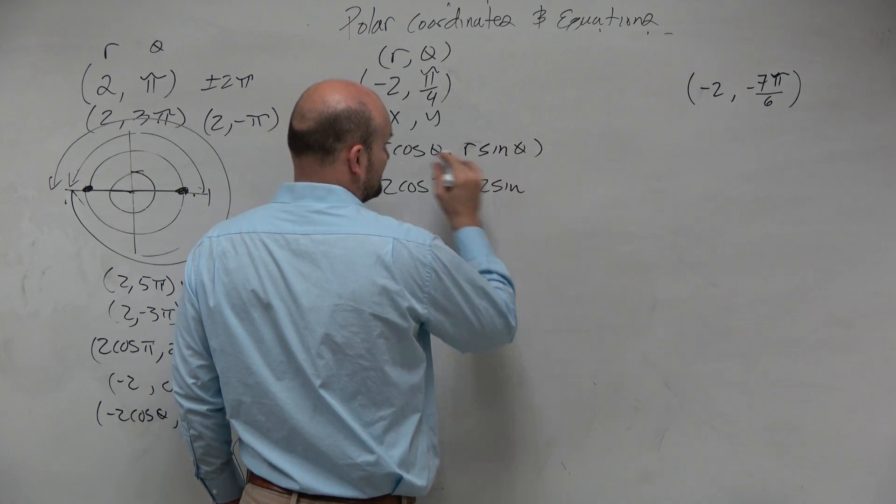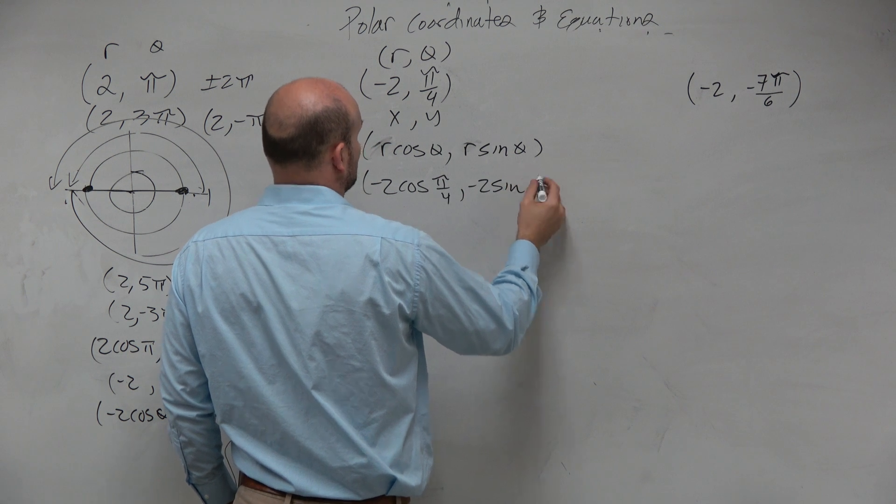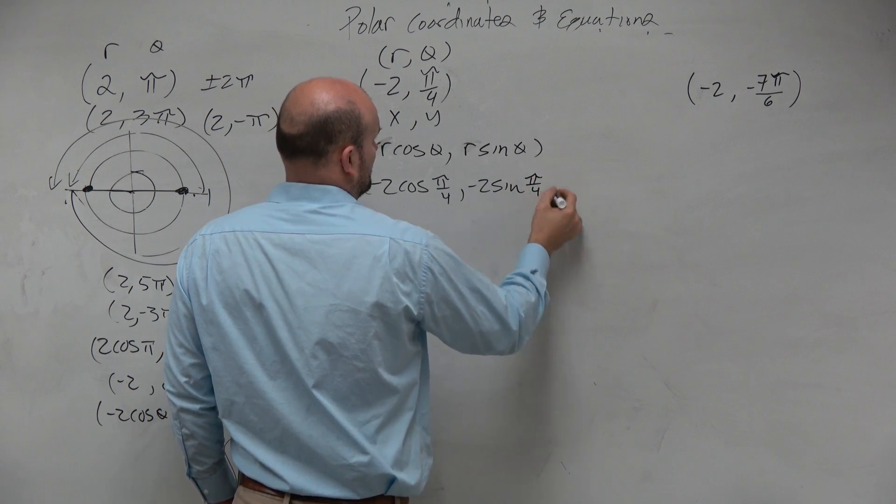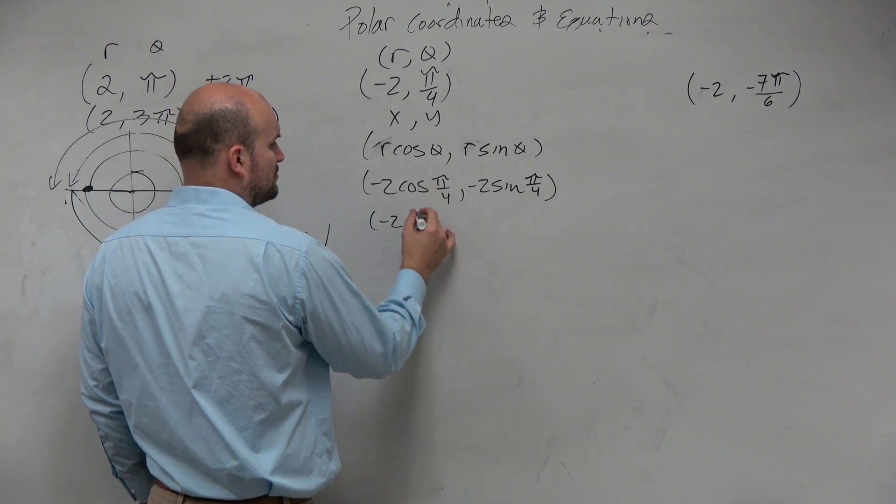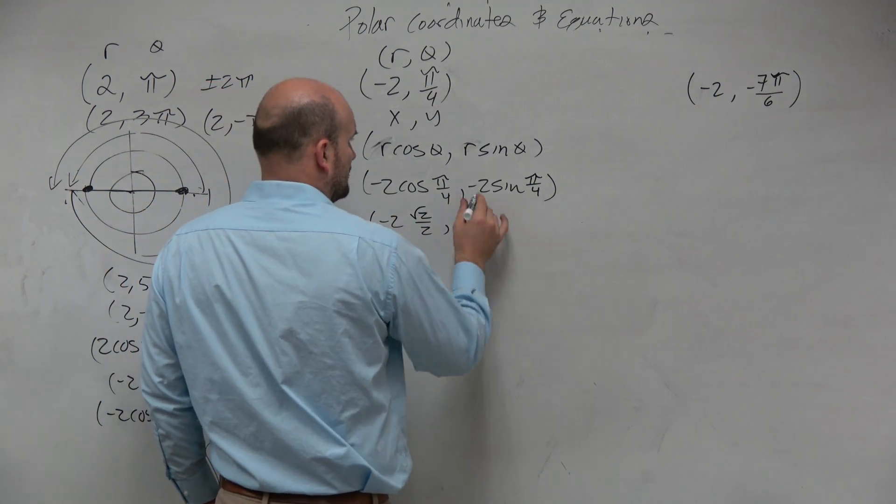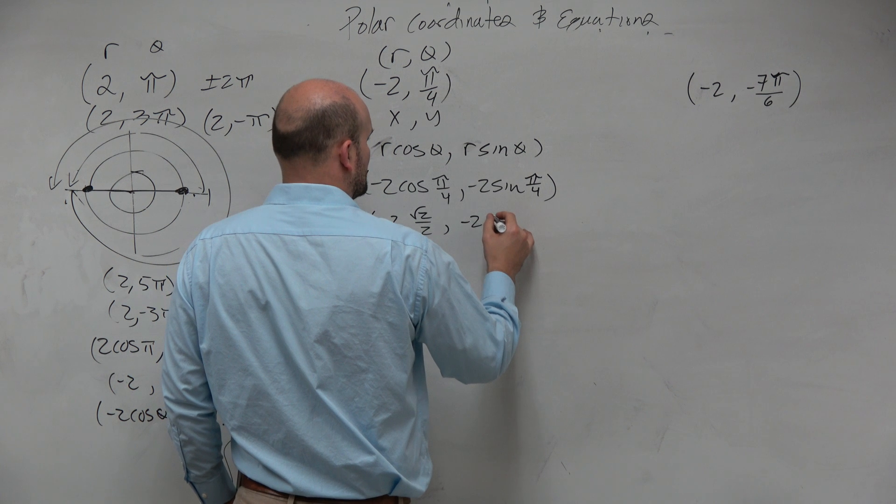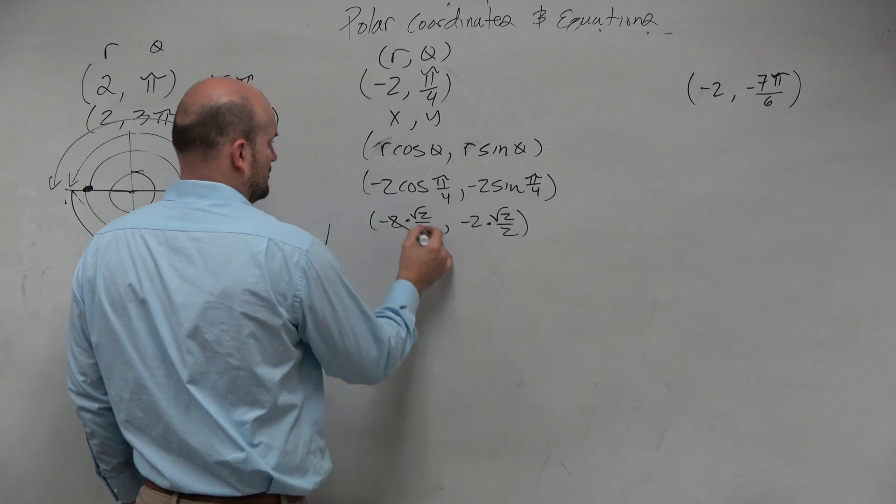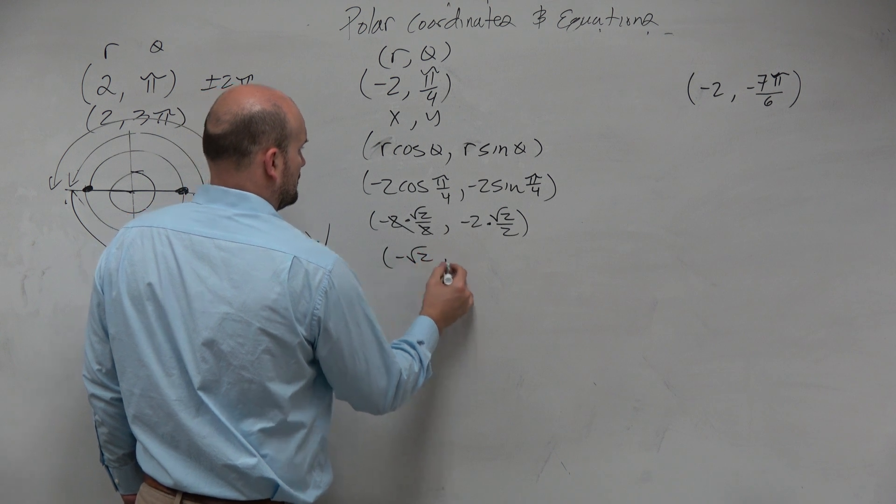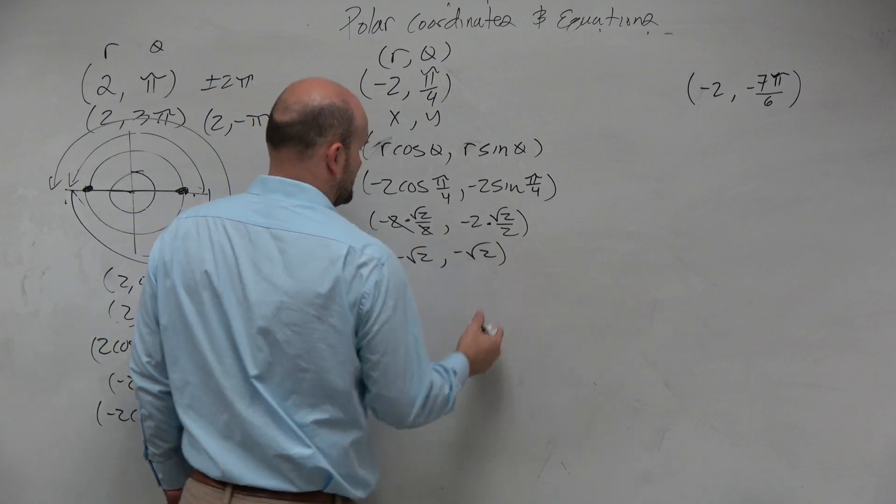So that's the sine of pi over 4. So let's see what we get here. This is negative 2. This is square root of 2 over 2. This is negative 2 square root of 2 over 2. So let's graph that.